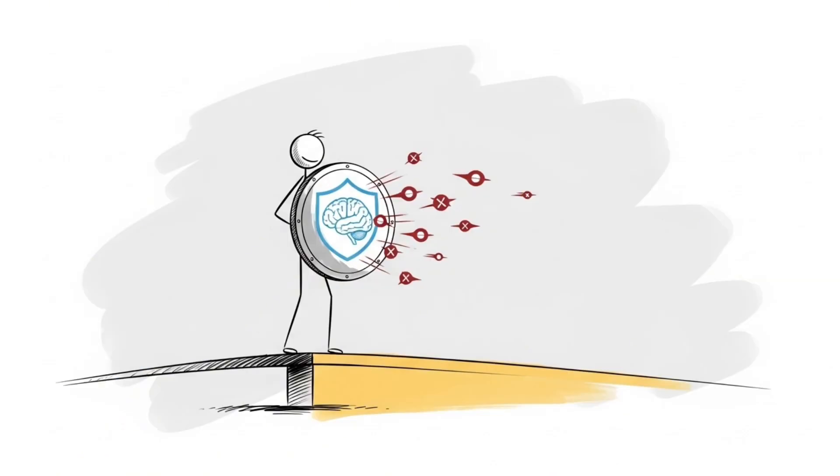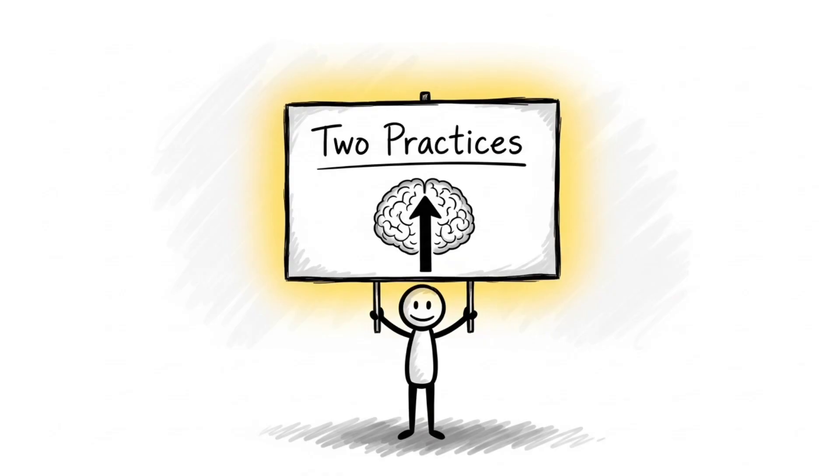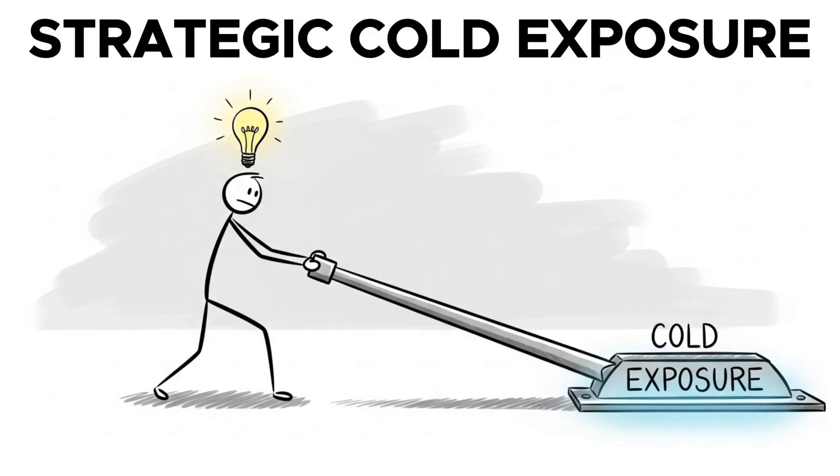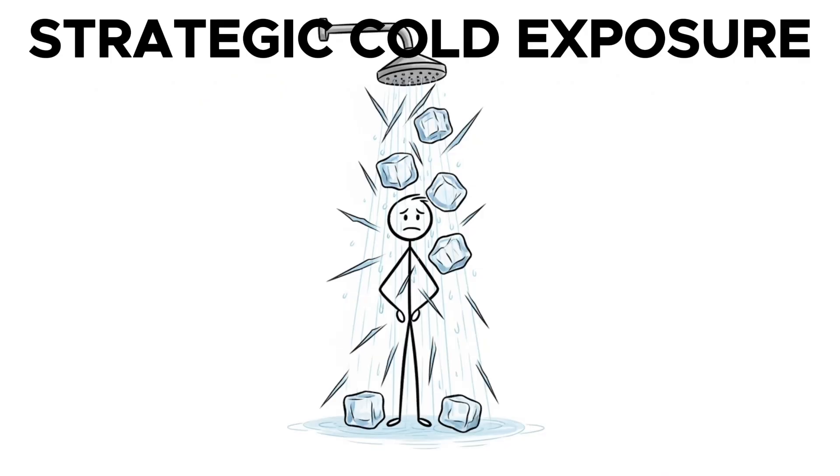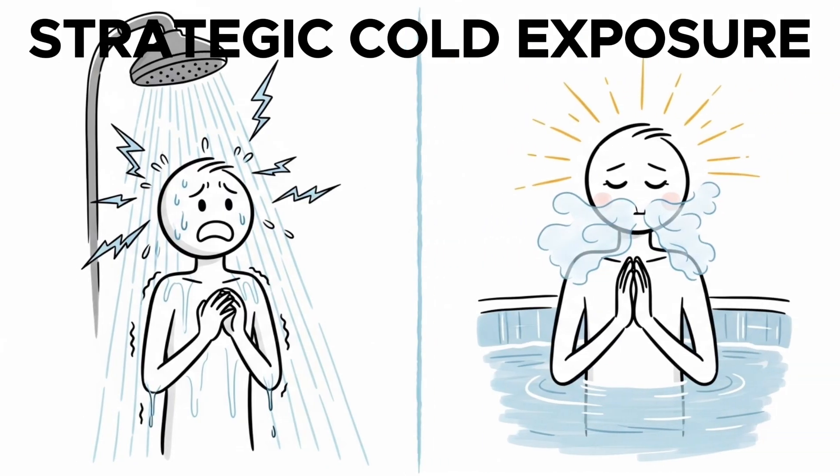Now that we understand how to protect our dopamine baseline, let's learn how to build it up. Chronic stimulant use will deplete dopamine and block neuroplasticity, but you have powerful tools at your disposal. Here are two scientifically validated and effective practices to healthily elevate your dopamine baseline. Number one, strategic cold exposure. This is not a hack, it is a scientifically validated biological lever. Immersion in cold water, whether in a shower or an ice bath, triggers a physiological shock response in your body and a massive release of adrenaline.